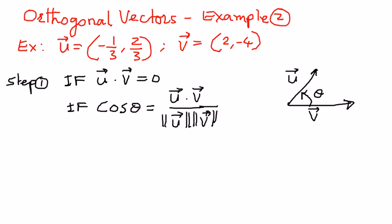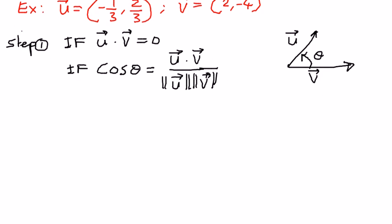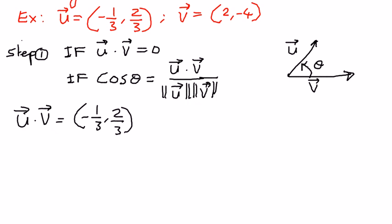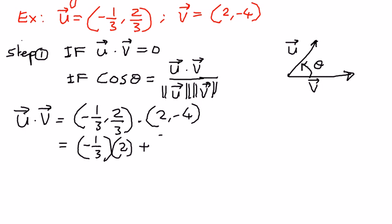We will test these two conditions to see where it fits in. First, let us see what the dot product of these two vectors is. U dot v: the components of u are negative 1 over 3, 2 over 3, dot the components of vector v, which are 2, negative 4. When we expand the dot product, we get: negative 1 over 3 times 2, plus 2 over 3 times negative 4.